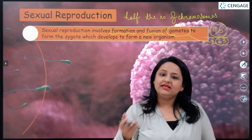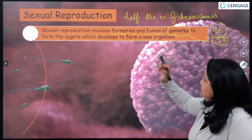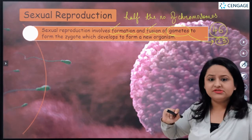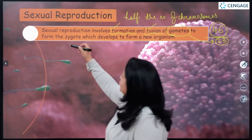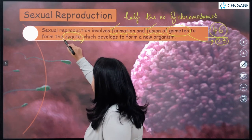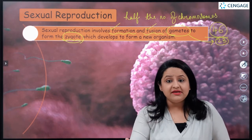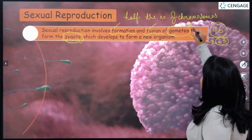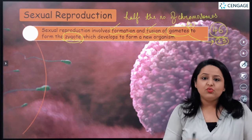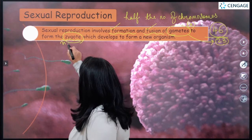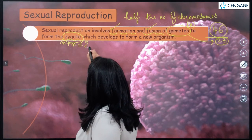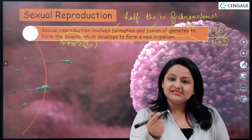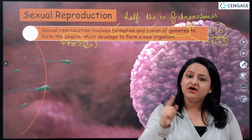We have studied meiosis in class 11th. In sexual reproduction, gametes are formed, then they fuse, and the fusion leads to a single cell known as the zygote. The gametes, having half the number of chromosomes, are represented by n — that is the haploid number. So when two gametes (n + n) fuse, they form a diploid structure known as the zygote.